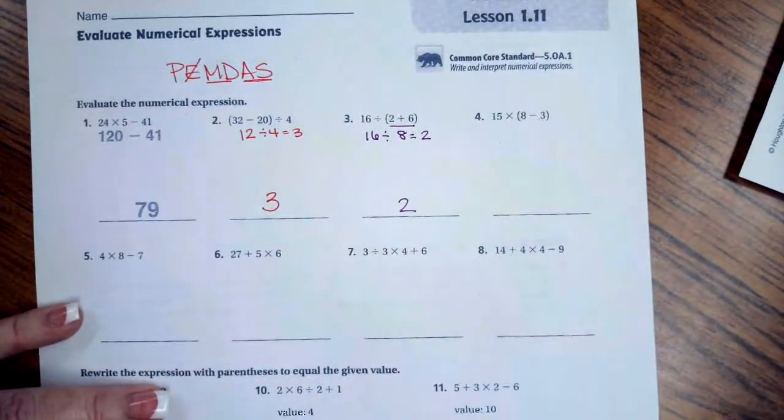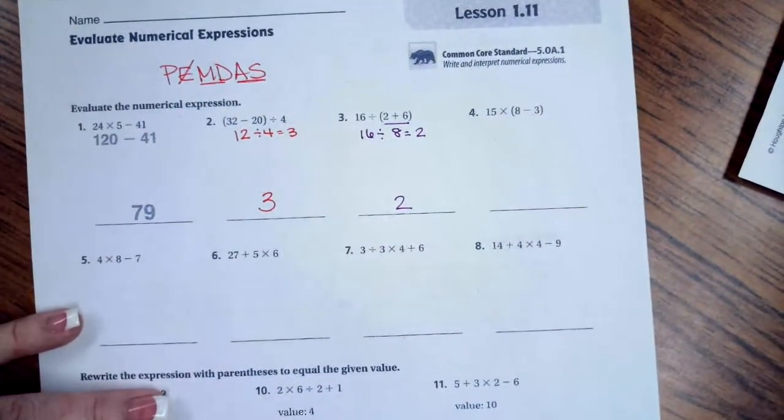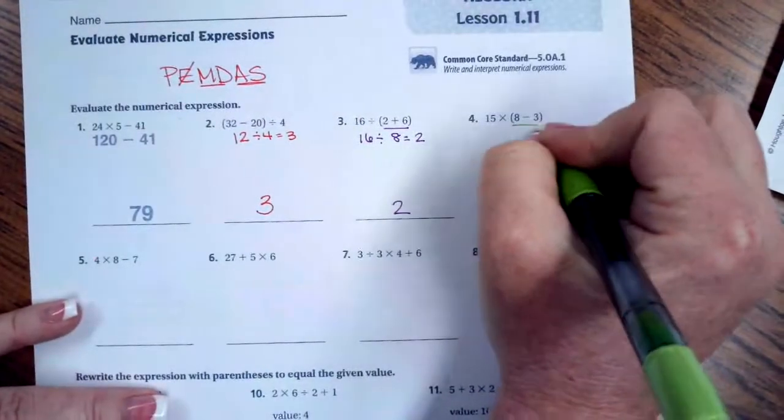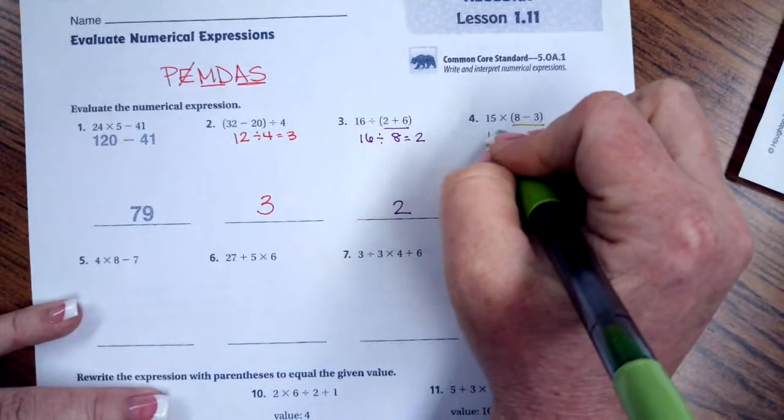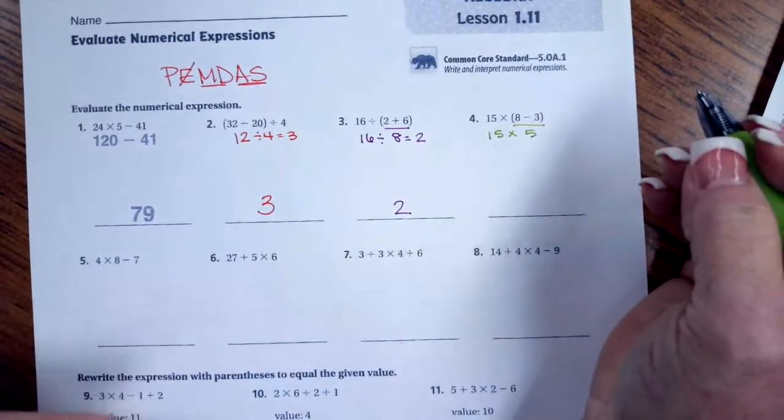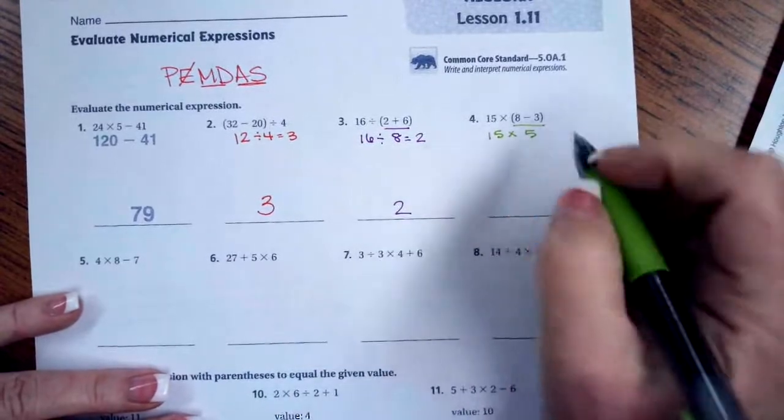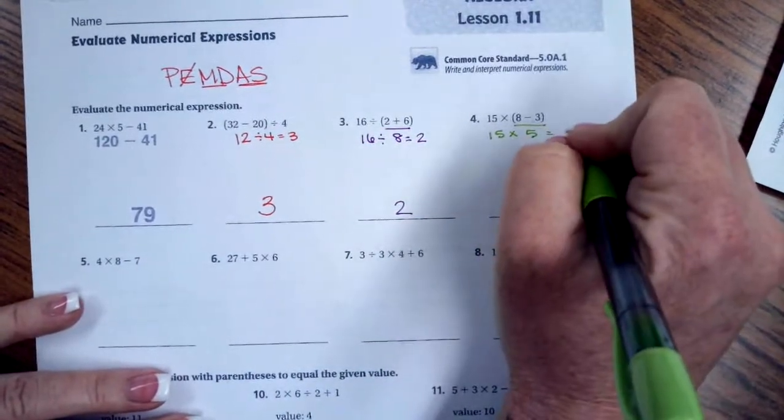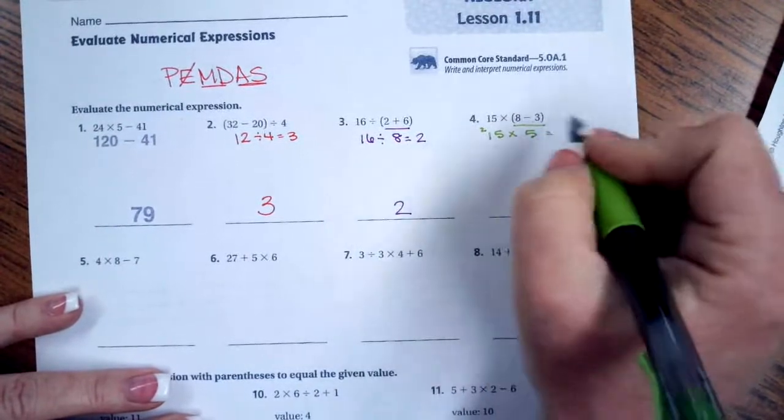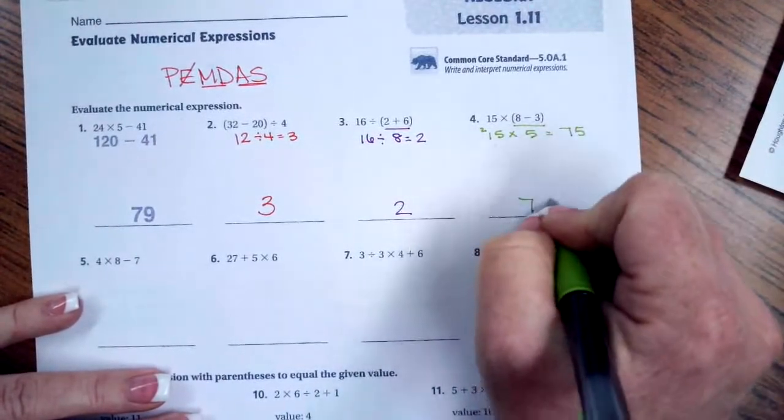Let's do another one. Parentheses first. 8 minus 3 is 5. So now I have 15 times 5. 5 times 5 is 25. I'm going to carry my 2 over here. 5 times 1 is 5 plus 2 is 7. 75.